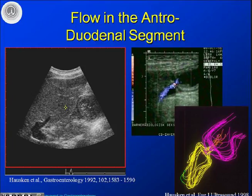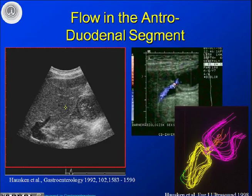Flow in the gastroduodenal segment has been studied in detail by Professor Hausken, who will talk to you afterwards. Using ultrasound and a liquid meal — which acts as a kind of contrast agent — you can see how the meal goes through the pyloric region and into the descending part of the duodenum. We have also used Doppler techniques and 3D ultrasound to visualize how pyloric emptying actually performs.